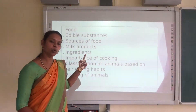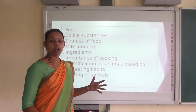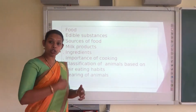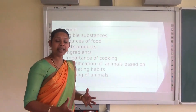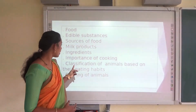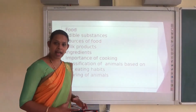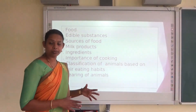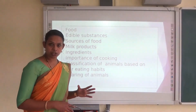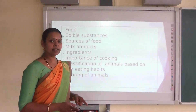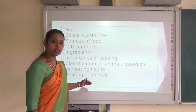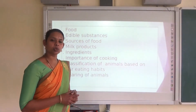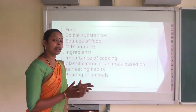Next is about the importance of cooking — we have seen several points about what happens to the food while cooking and how it helps us. And next is about the classification of animals based on their eating habits — you can group animals into five different groups. And finally, the special names given to the rearing of animals.